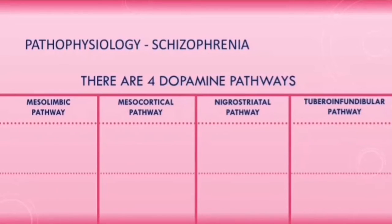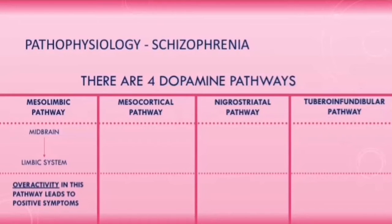The mesolimbic pathway goes from the midbrain to the limbic system. It's thought that overactivity in this pathway leads to the positive symptoms seen in schizophrenia, such as delusions and auditory hallucinations.